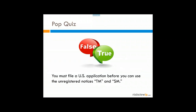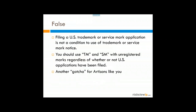Pop quiz: do you have to file a US application before you can use the unregistered notices TM and SM? The answer is no. Filing a US trademark or service mark application is not a condition to use those notices. You should use TM and SM with unregistered marks regardless of whether there's a US application. This is a gotcha for artisans: you can have trademark protection even without the R in a circle, a TM, or an SM — all it has to be is source-identifying.